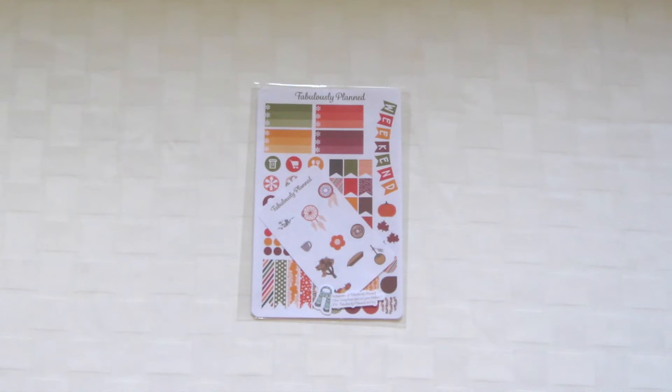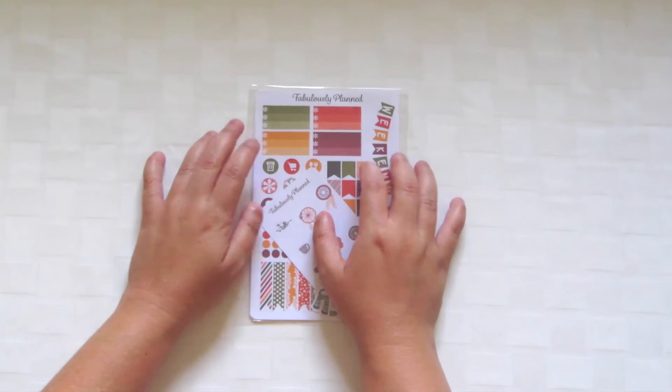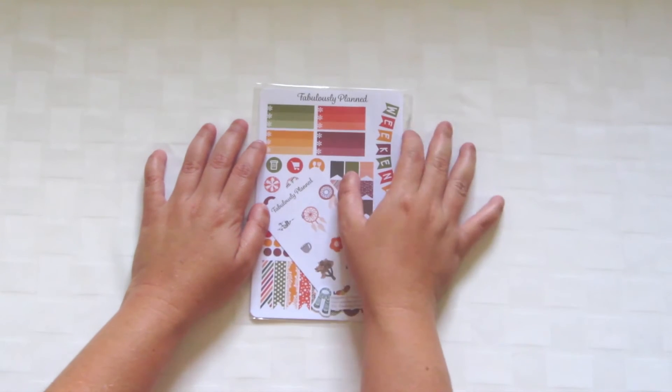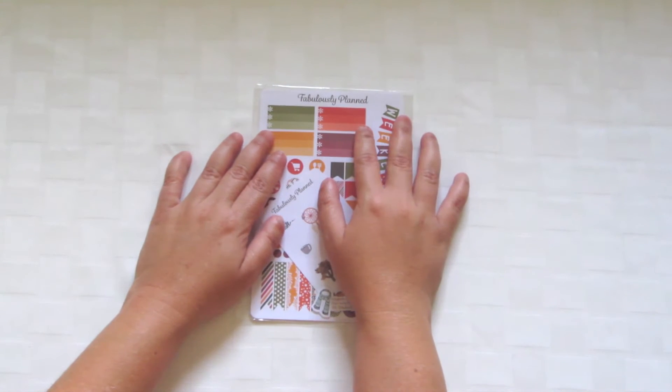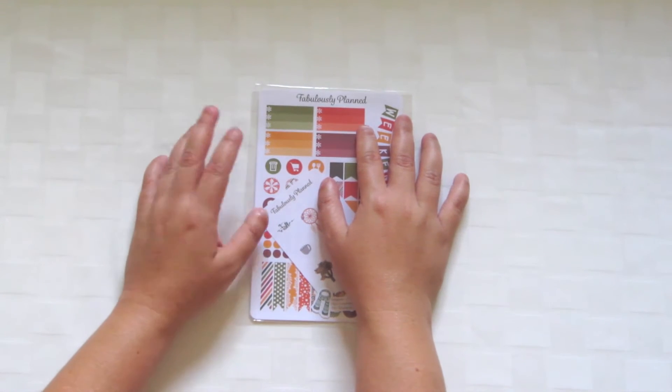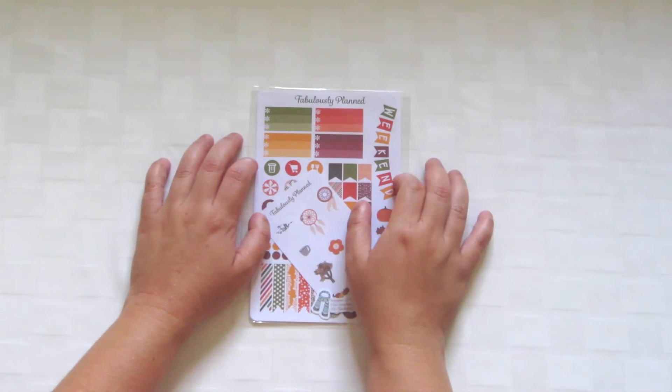Hey guys and welcome back to another video. Today's video is a planner sticker Etsy haul featuring the store Fabulously Planned. They used to be known as Glam Planning, but she felt like there were a lot of people with glam planning type names, so she changed her shop name.